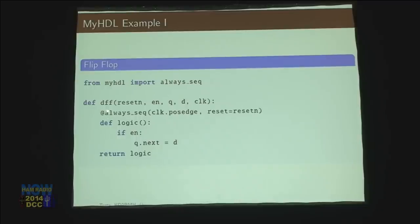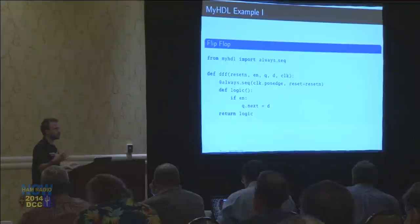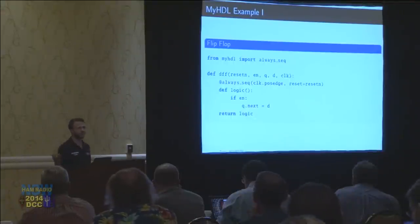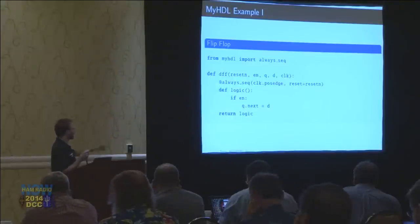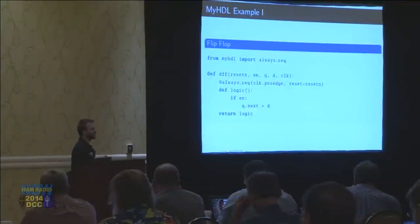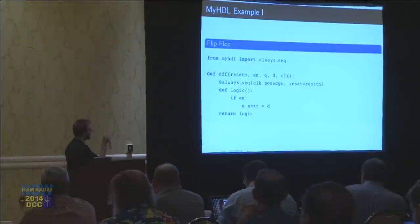The @ symbol is a little piece of syntactic sugar. When Python sees this, it takes the function — because every function in Python is also another object — and it passes that function into this program called always_sequential, or another function, and then that returns another thing. What this does underneath, from myHDL, is it registers this little block of logic with myHDL so that way it's aware of what we're working on and what are the different little machines that we're putting together that we want to have end up in our final Verilog file.